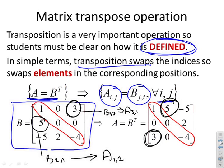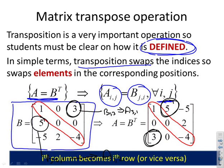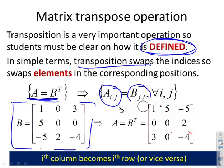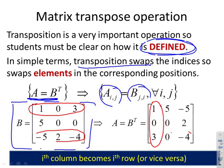That is the definition of transposition. An alternative way of thinking about it: the i-th row becomes the i-th column. For example, the first row of B — 1, 0, 3 — becomes the first column of B transposed. The third row of B becomes the third column of B transposed.